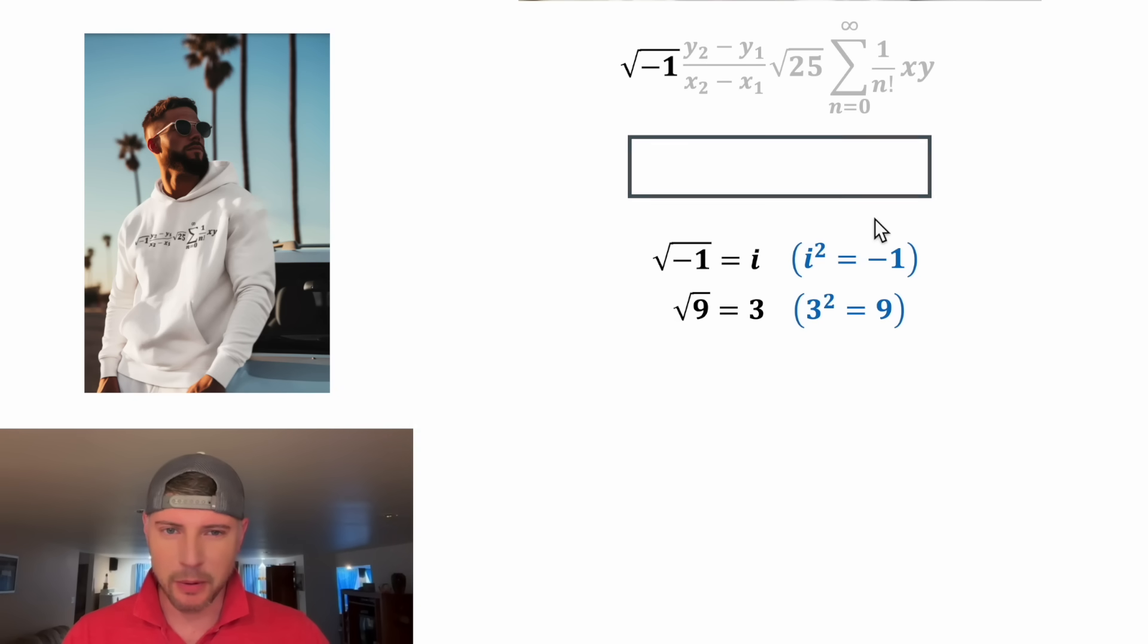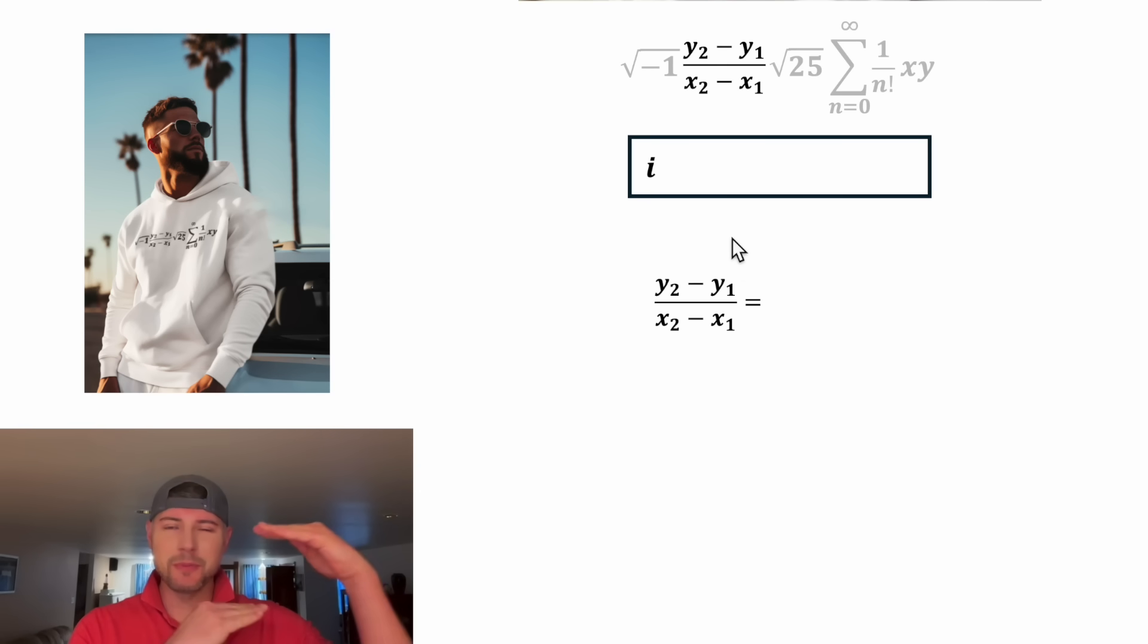Let's move this down, put a box here. And in the place of the square root of negative 1, let's put i. Now we can move on to this part. y sub 2 minus y sub 1 is the difference between two y values. That's measuring the rise. And x sub 2 minus x sub 1 is the distance between two x values. That's measuring the run. So this is measuring the rise over run between two points, or in other words, the slope between those two points.